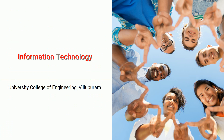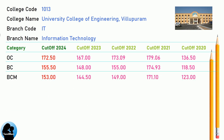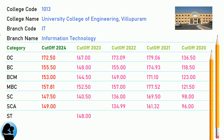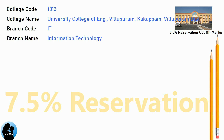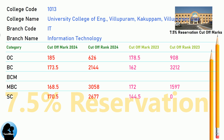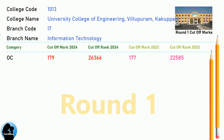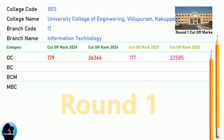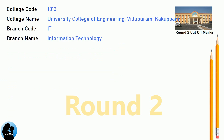DNA Cut-off for University College of Engineering, Villapuram in Information Technology. DNA 7.5 Reservation Cut-off for University College of Engineering, Villapuram in Information Technology. DNA Round 1 Cut-off for University College of Engineering, Villapuram in Information Technology. DNA Round 2 Cut-off for University College of Engineering, Villapuram in Information Technology.